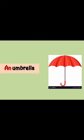Which picture is this? This is an umbrella picture. We use an umbrella on a rainy day. The beginning letter of umbrella is U, which is a vowel. So we use AN here. We say: an umbrella.